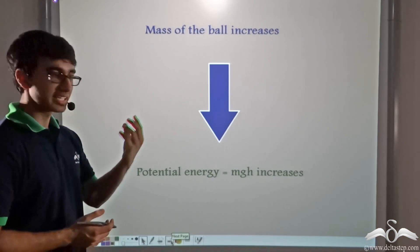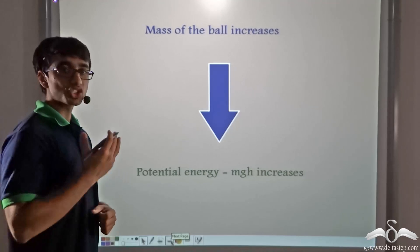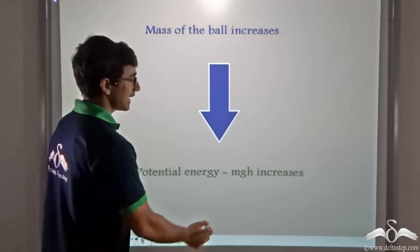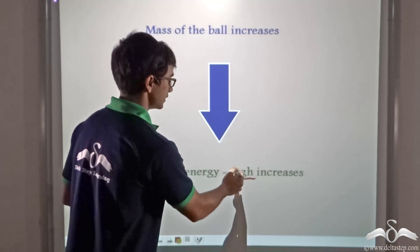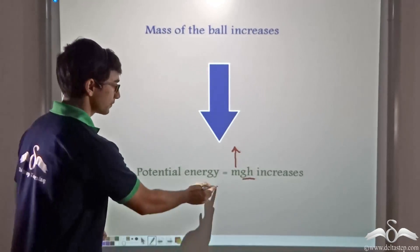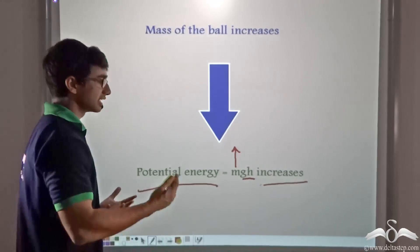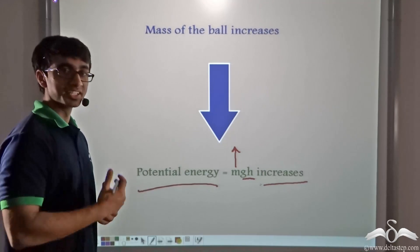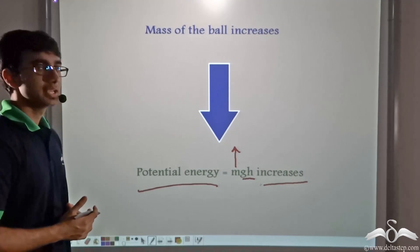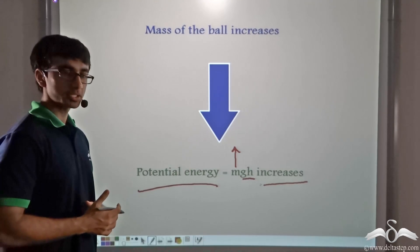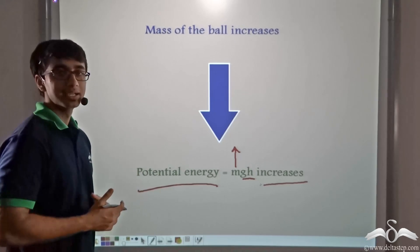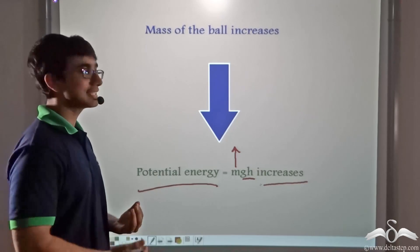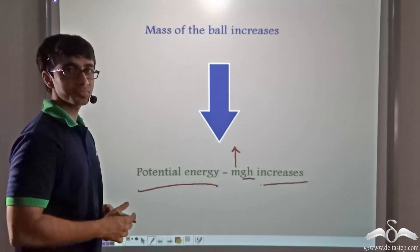When mass of the ball increases, since the man drops the ball from the same height, h remains constant and g is the same. So keeping g and h constant, when m increases the potential energy simultaneously increases, and when m decreases the potential energy also decreases. When a heavier ball is dropped, because it has more potential energy, it causes more damage than a lighter ball with lesser m.